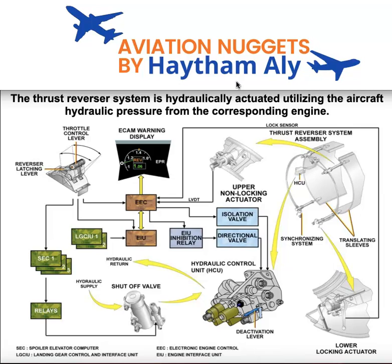As you can see, the thrust reverser system is hydraulically actuated, utilizing the aircraft hydraulic pressure from the corresponding engine — so each engine supplies its own reverser. The green hydraulic system supplies reverser one for engine number one, and the yellow hydraulic system supplies the reverser for engine two.